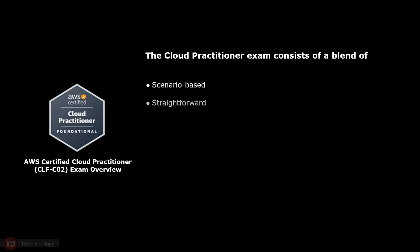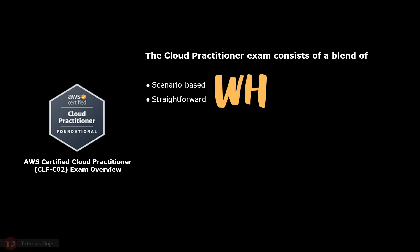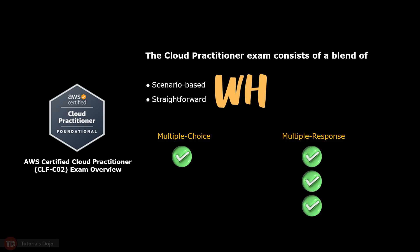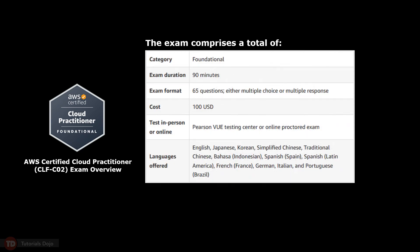The Cloud Practitioner exam consists of a blend of scenario-based and straightforward WH questions which may come in the form of multiple choice or multiple response. In the multiple choice type, there is a single accurate answer amidst three incorrect options, whereas the multiple response format has two or more correct answers from a pool of five or more options. The exam comprises a total of 65 questions that you need to finish within 90 minutes. The scoring system spans from 100 to 1000 with a minimum passing score of 700.